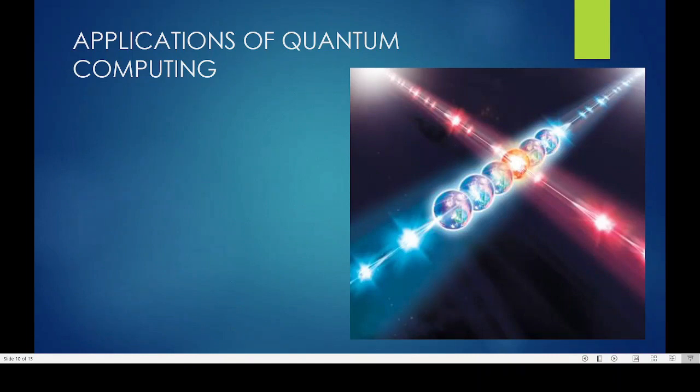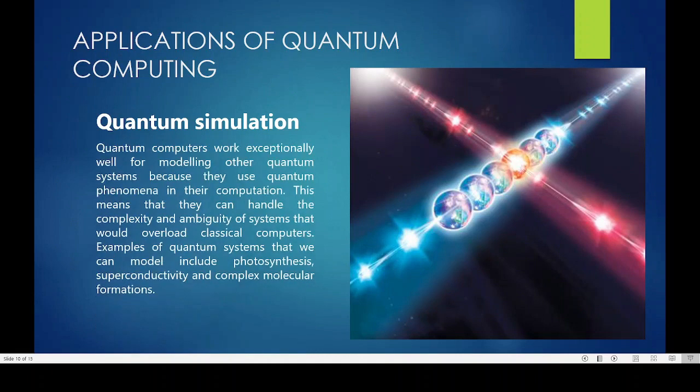Next is applications of quantum computing. First one is quantum simulation. Quantum computers work exceptionally well for modeling other quantum systems because they use quantum phenomena in their computation. This means that they can handle the complexity and ambiguity of systems that would overload classical computers. Examples of quantum systems that we can model include photosynthesis, superconductivity, and complex molecular formations.